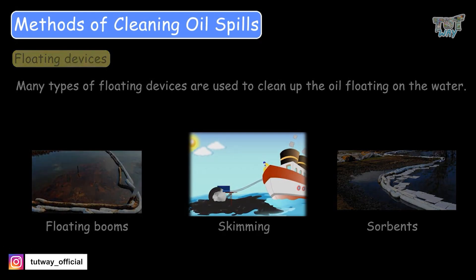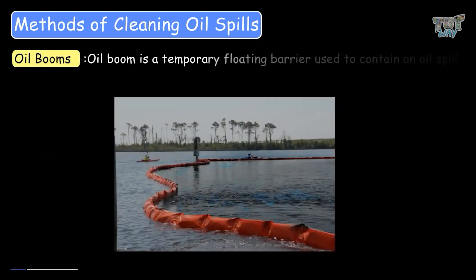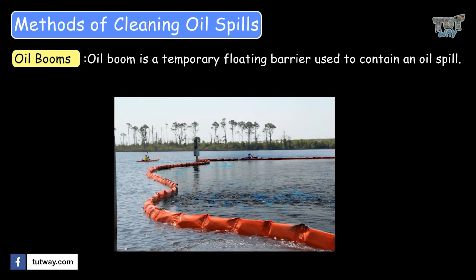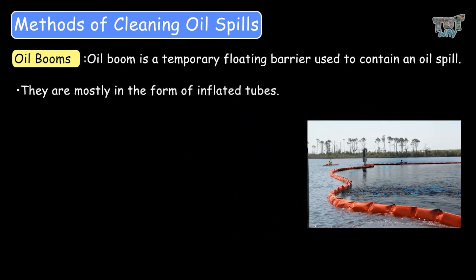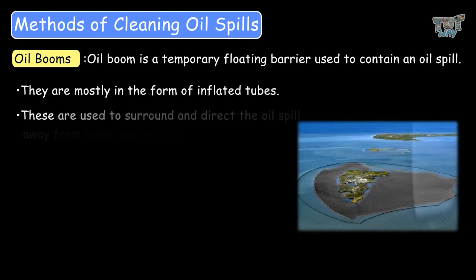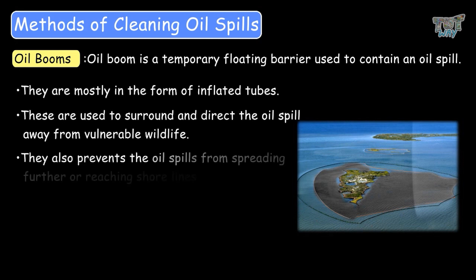Oil booms are temporary floating barriers used to contain the oil spill. They are mostly used in the form of inflated tubes. They are used to surround the oil and direct the oil spill away from vulnerable wildlife, and also prevent the oil spill from spreading further or reaching the shorelines.